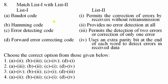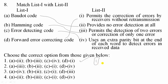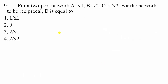Question 8: Match the coding schemes. Baudot code has no error detection — used in telegraphy. Hamming code is used to detect two errors or correct one error. Error detection code uses an extra parity bit at the end of each word to detect errors. Forward error correcting code permits correction of errors at the receiver without retransmission. The correct option is option 1.